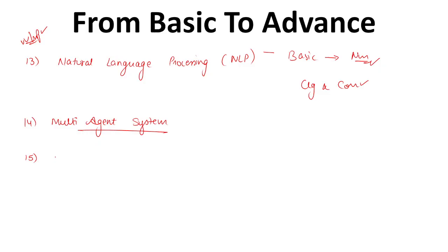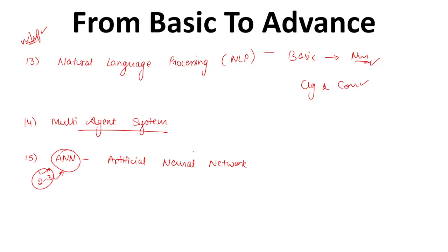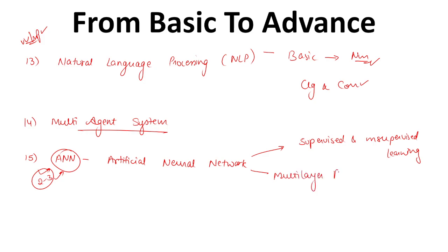The next most important topic is ANN, which stands for Artificial Neural Network. If you are preparing for any competitive exam, you will definitely see two to three questions from this single topic. Under artificial neural network, we have some topics like supervised and unsupervised learning, which is one of the most important topics here. Another topic we have is multilayer perceptron, which is also a very important topic.